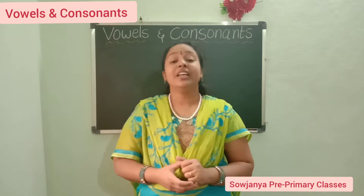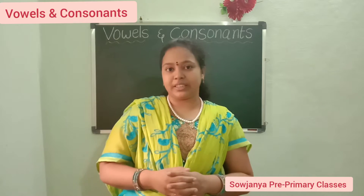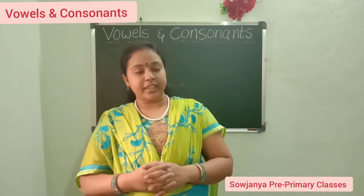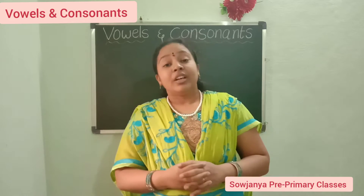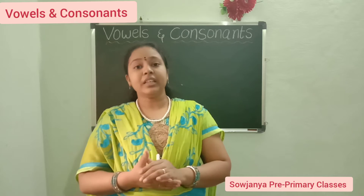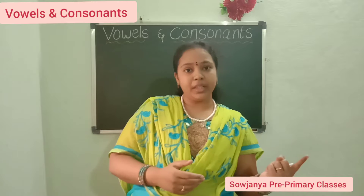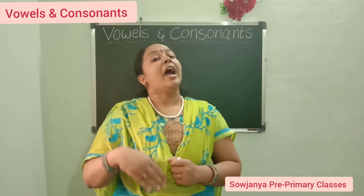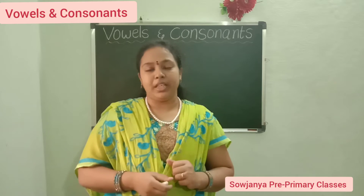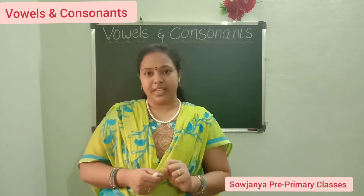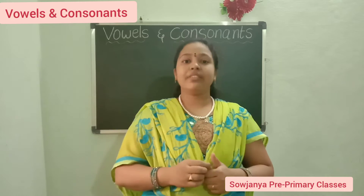Okay children, there is a village. Its name is Alphabets. In that Alphabets village, there are 26 members. And those 26 members are in two families. One family name is vowels and another family is consonants. In the vowels family, 5 members are there. And in the consonants family, 21 members are there.